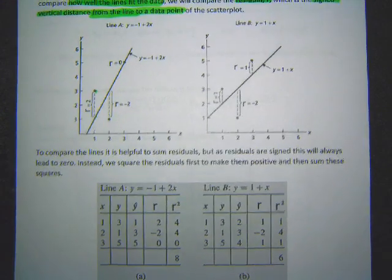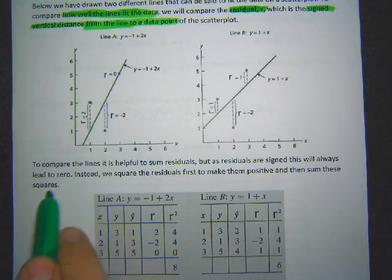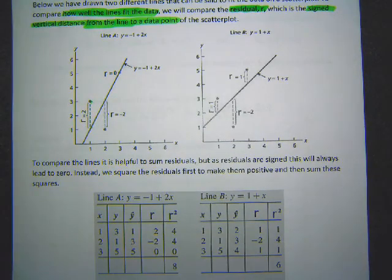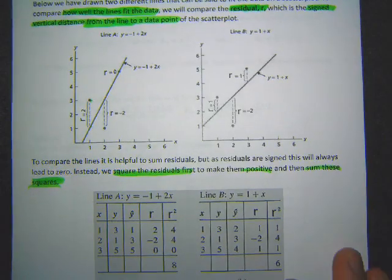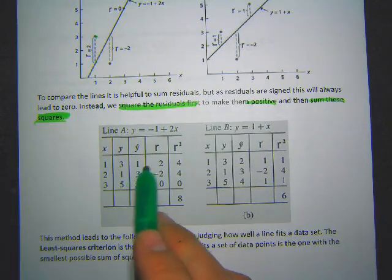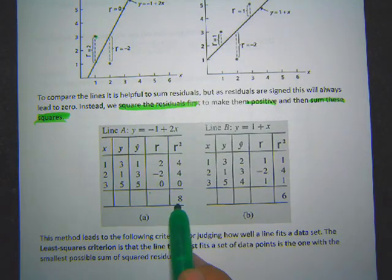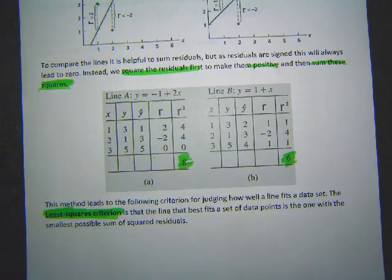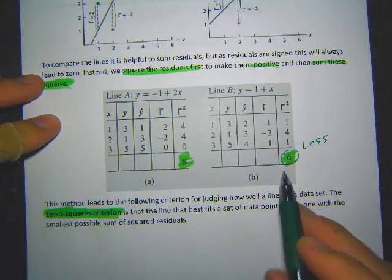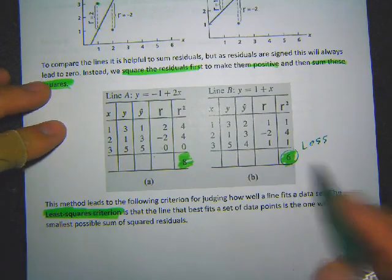To compare lines, we'd like to add up all the residuals, but since they are signed they always sum to zero. So instead, we square the residuals first to make them all positive, then sum those squares. The line with the smallest sum of squared residuals best fits the data because it has the least difference between the line and the data points.